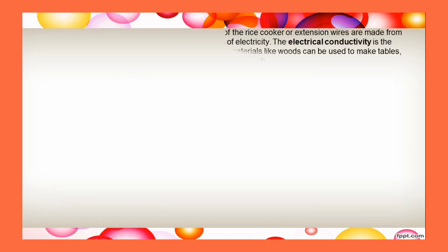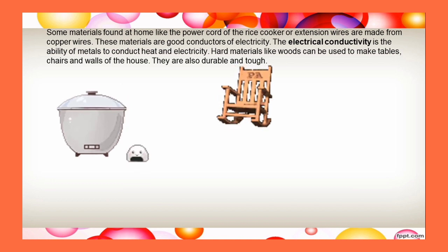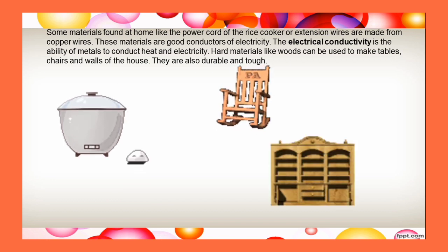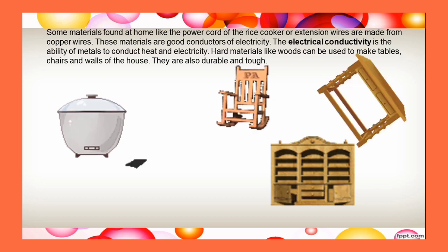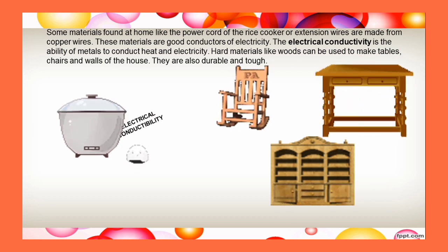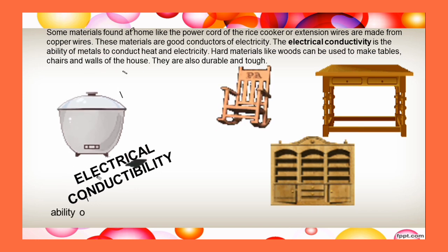Some materials found at home, like the power cord of the rice cooker or extension wires, are made from copper wires. These materials are good conductors of electricity. Electrical conductivity is the ability of metals to conduct heat and electricity.